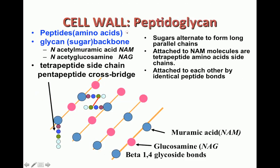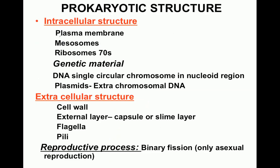The bacterial cell structures are classified as intracellular or extracellular, with the plasma membrane as the baseline. Intracellular structures include mesosomes, ribosomes, a single circular chromosome in the nucleoid region, and plasmids. Extracellular structures include the cell wall, the capsule or slime layer beyond the cell wall, and flagella and fimbria.